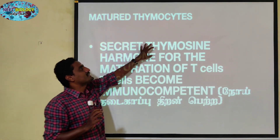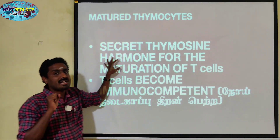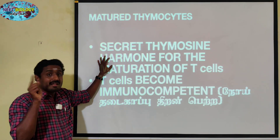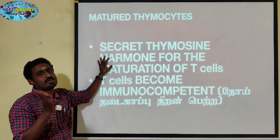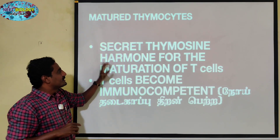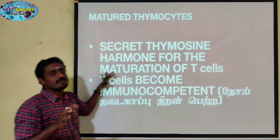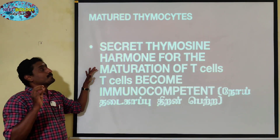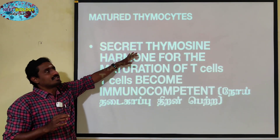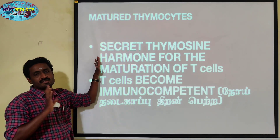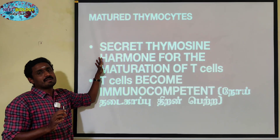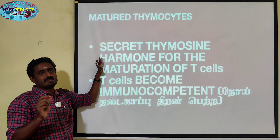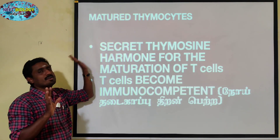In the thymosin hormone — who secreted it? The thymocytes. The thymocytes matured. So, maturation of T cells will be taking place by the hormone called thymosin, which has been secreted by the mature thymocytes which are present in the medulla.